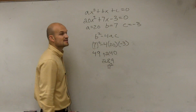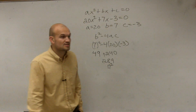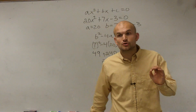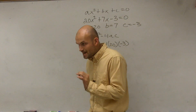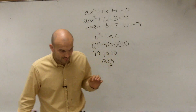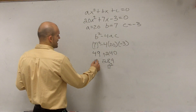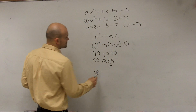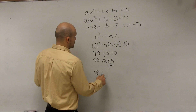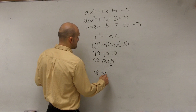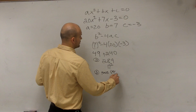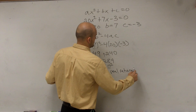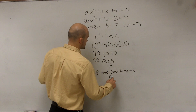Since it is a perfect square — 17 squared — we know that we're going to have two real rational roots. So that was part a, and then for part b you had to describe it: we have two real rational roots.